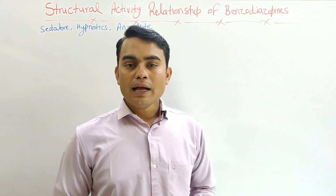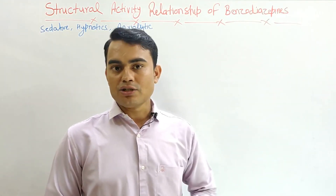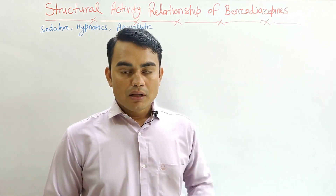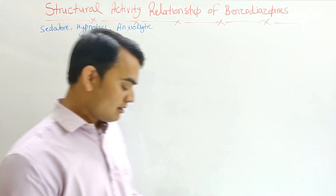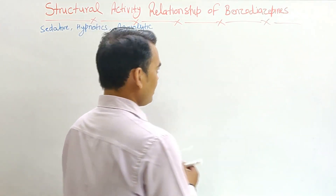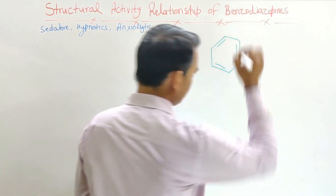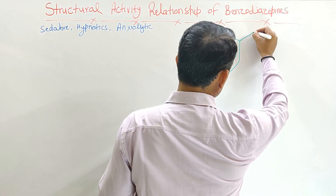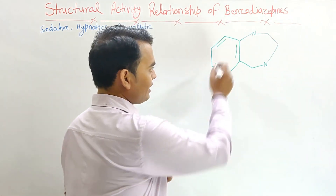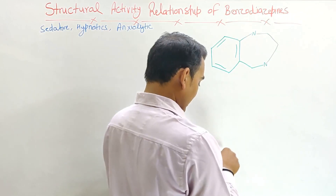The activities of benzodiazepine are basically due to their structure, and a very basic change in their structure can alter or affect the pharmacokinetic or pharmacodynamic property. The common structure of benzodiazepine has a six plus seven member fused ring with two nitrogens. It has two rings: a six-member ring and a seven-member ring. The seven-member ring has two nitrogens.